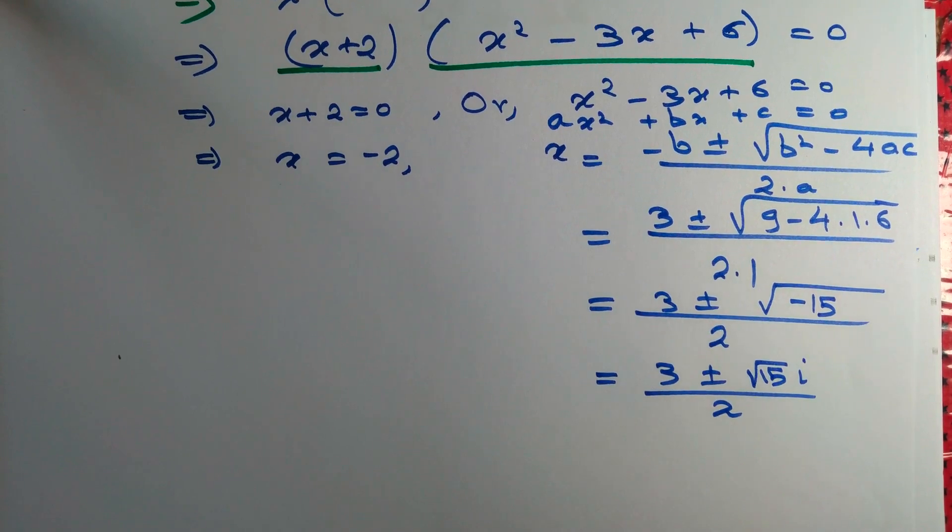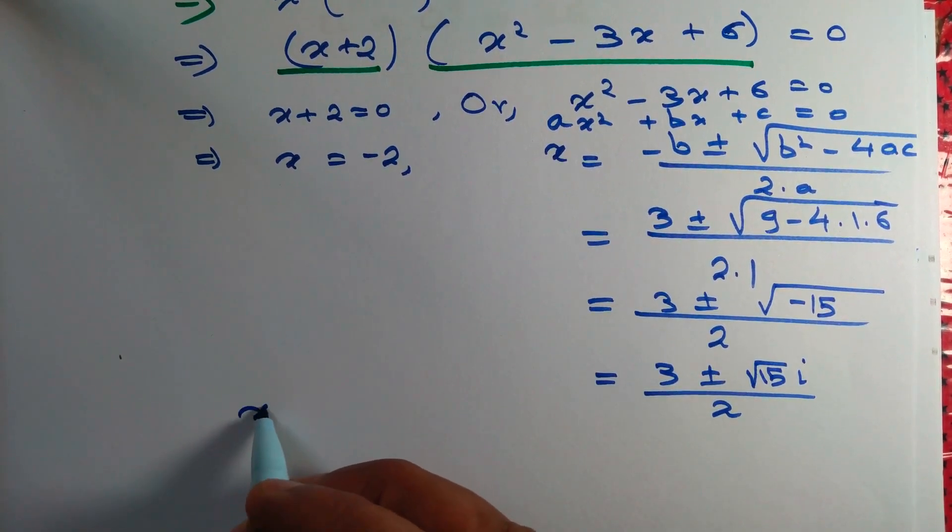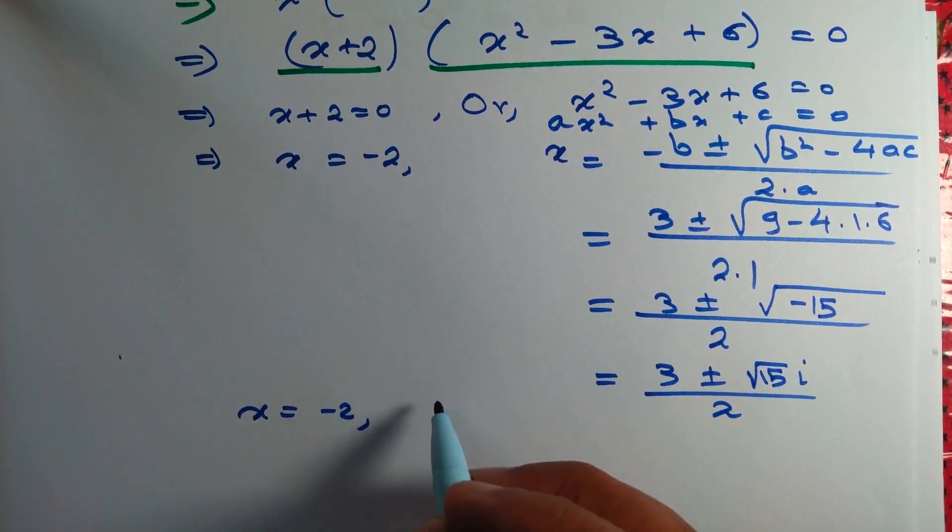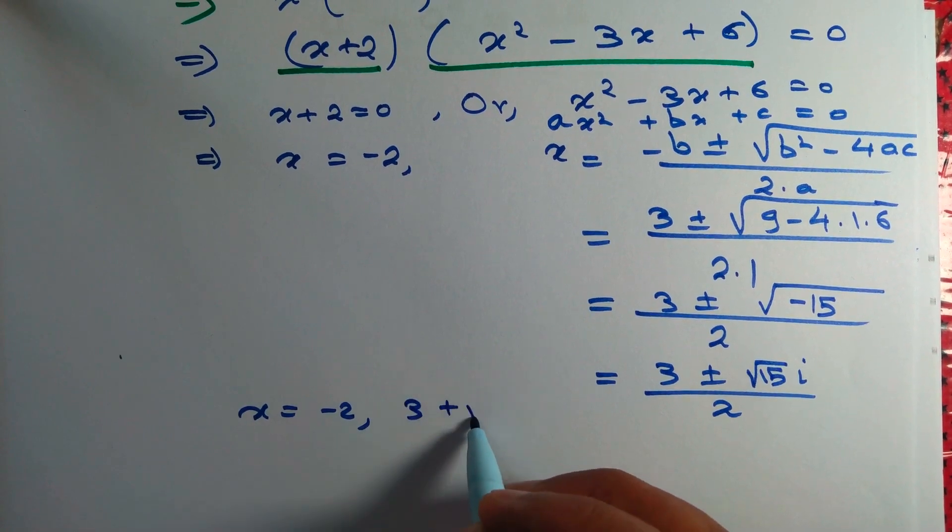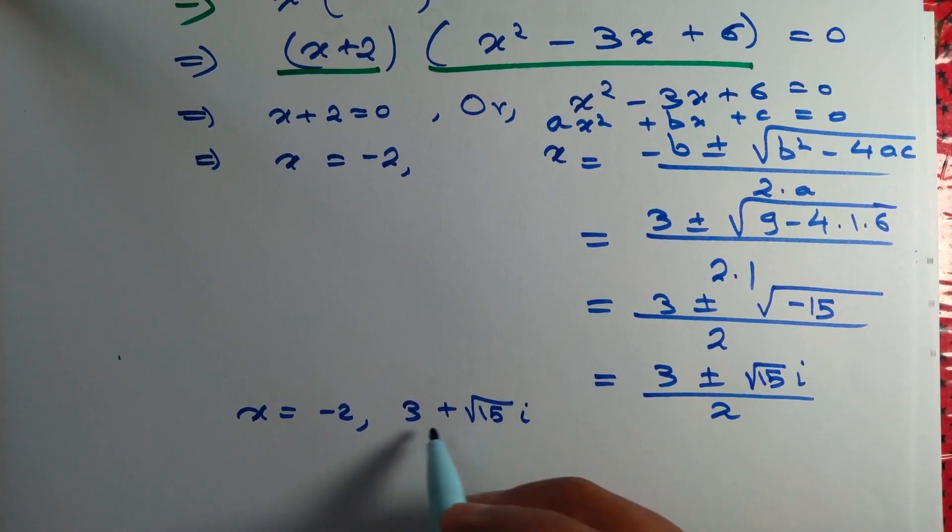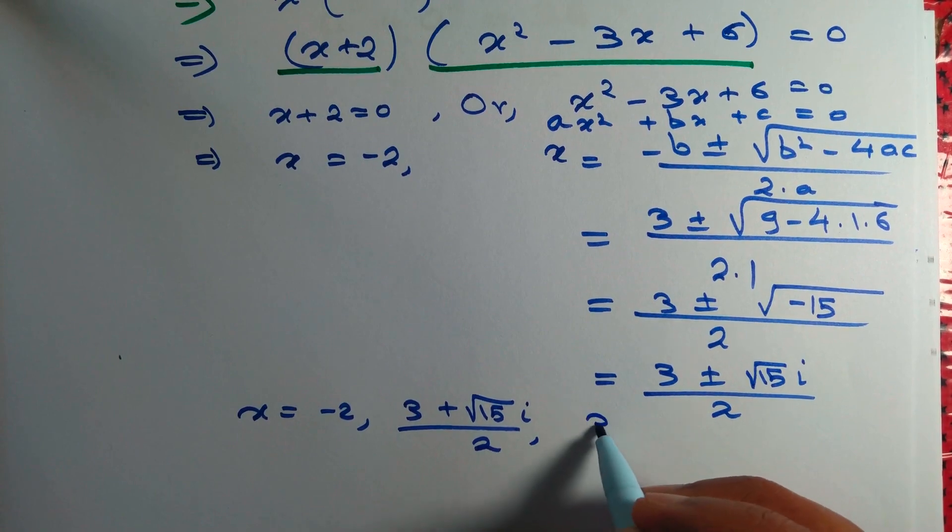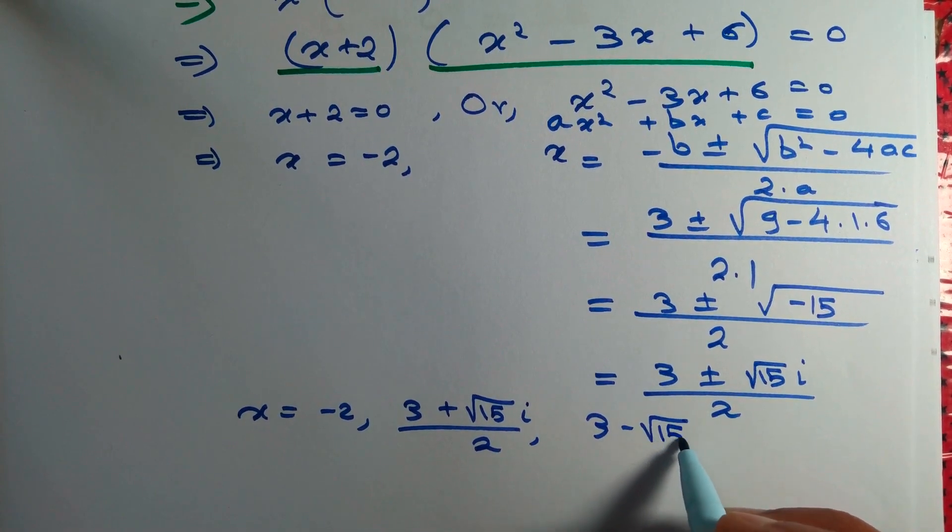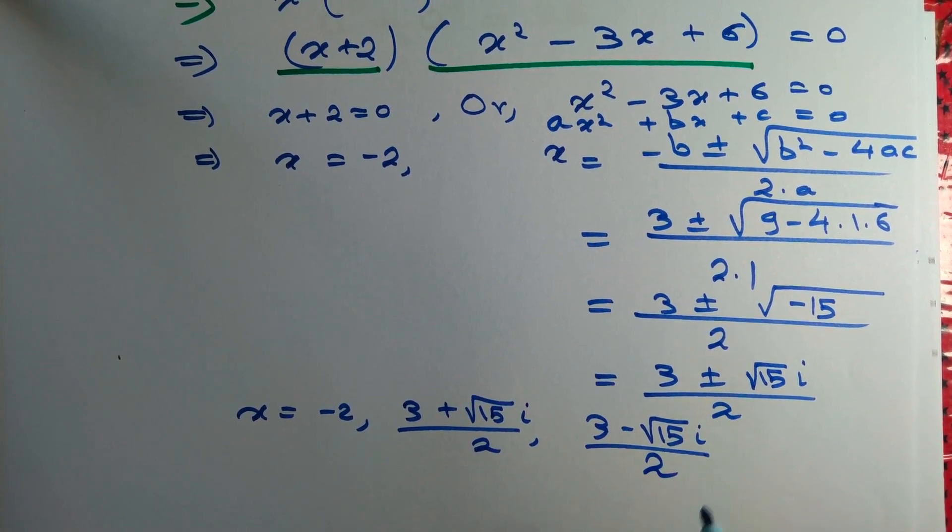So the solutions of the equation are given by x equals minus 2, x equals 3 plus root 15i by 2, x equals 3 minus root 15i by 2. And we are done.